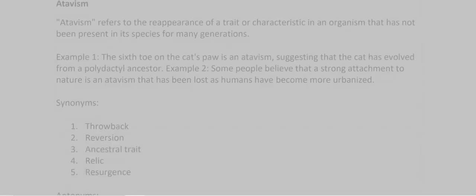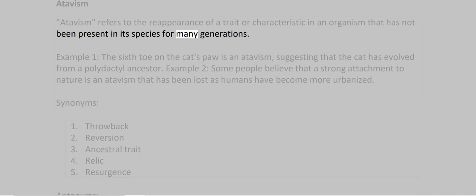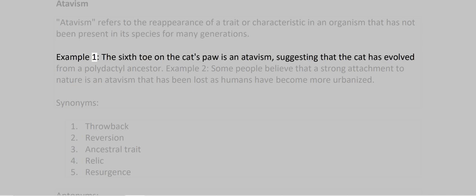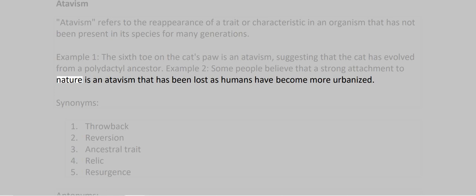Atavism. Atavism refers to the reappearance of a trait or characteristic in an organism that has not been present in its species for many generations. Examples: 1. The sixth toe on the cat's paw is an atavism, suggesting that the cat has evolved from a polydactyl ancestor. 2. Some people believe that a strong attachment to nature is an atavism that has been lost as humans have become more urbanized.